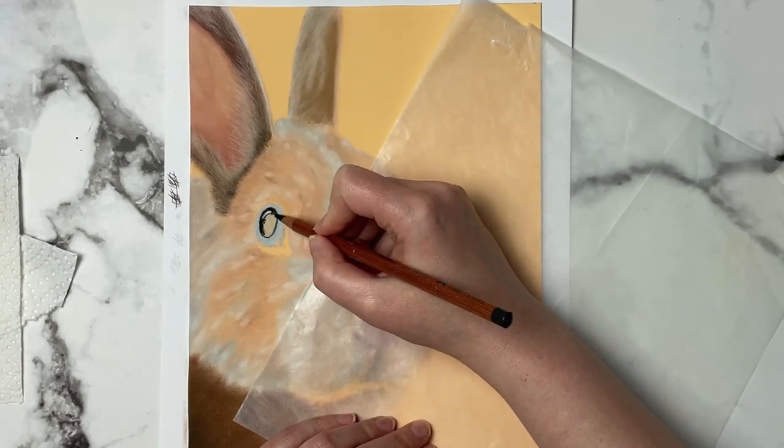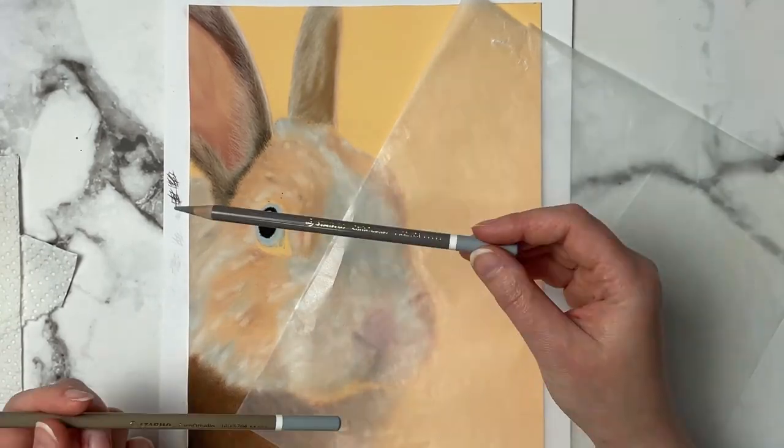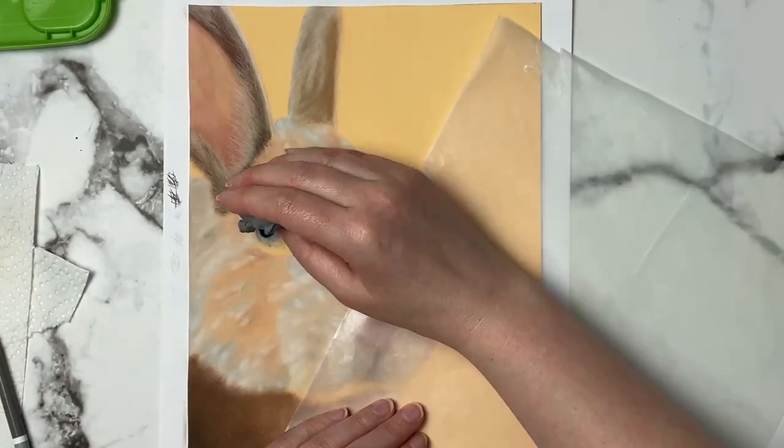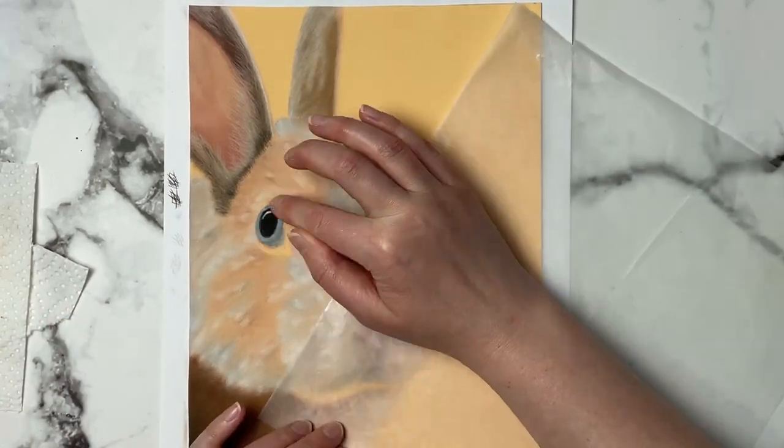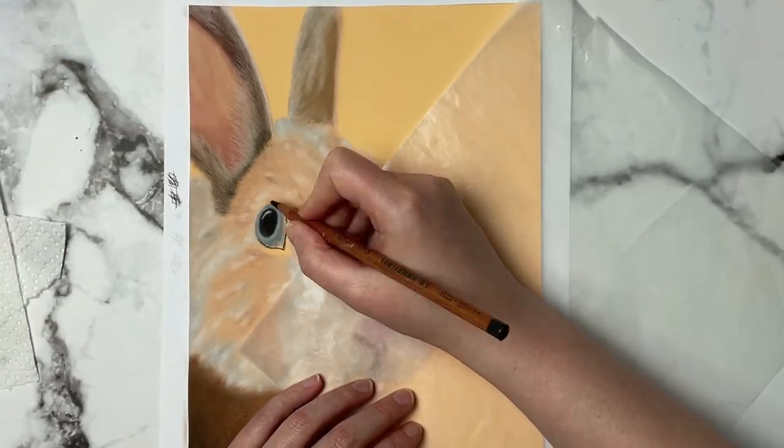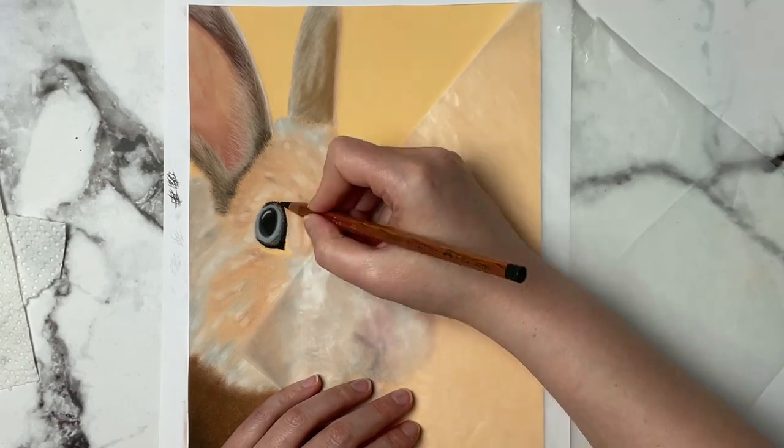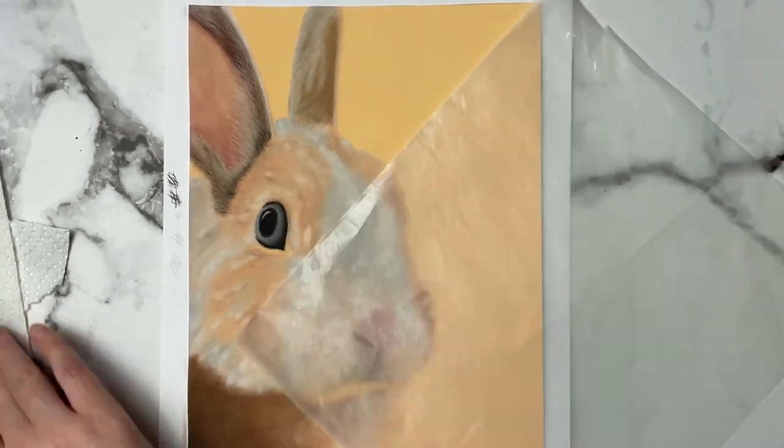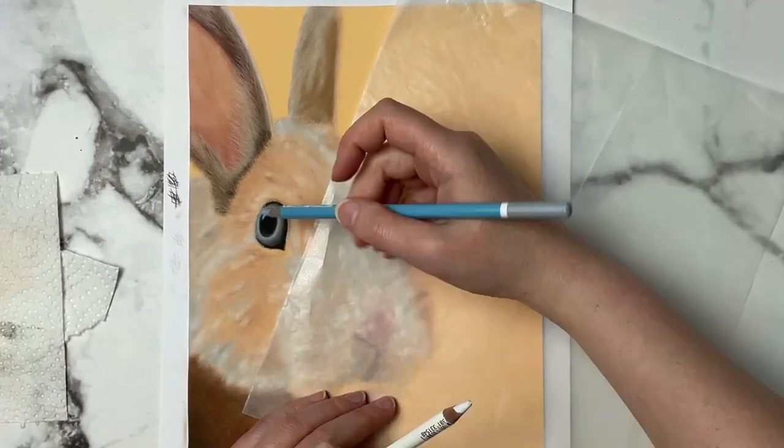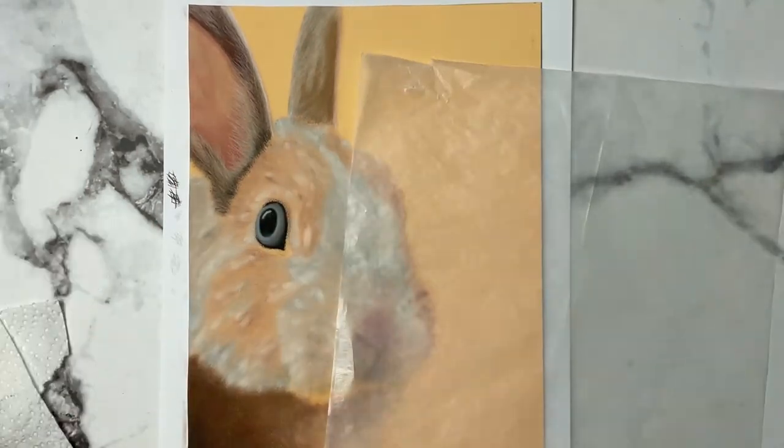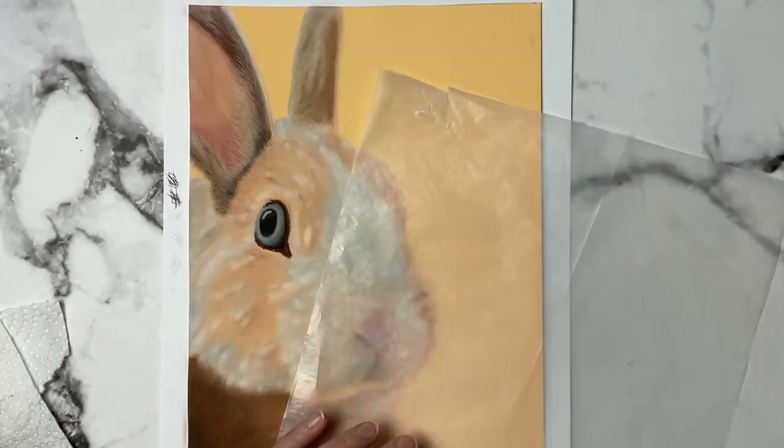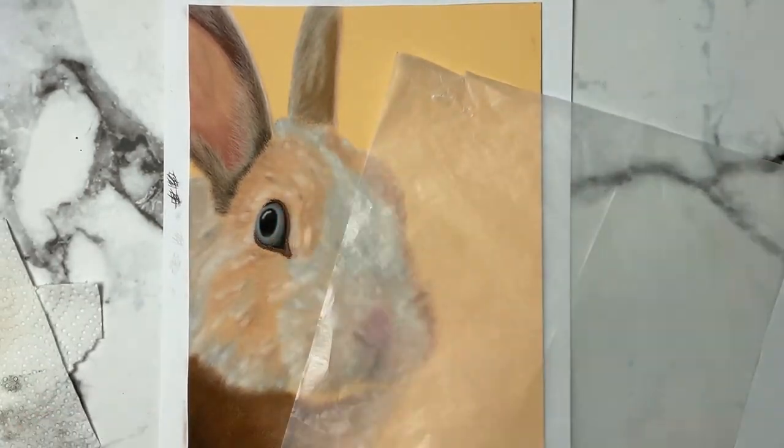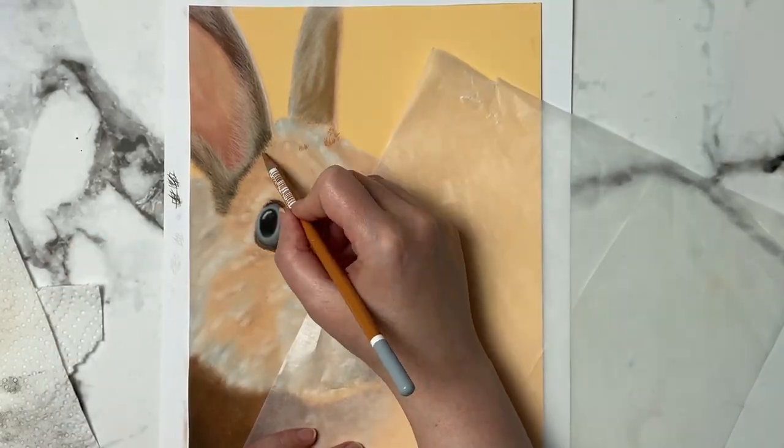Now one thing I do want to point out here is my colors are not the exact same colors that you would see in the bunny here, so don't worry if you don't have the exact same colors. Really we're just looking at our lights and darks and I want to get something that's close enough. So if it's like a warm brown or a dark cool brown, a little bit more of a red tinged brown, so that's what I'm looking for.